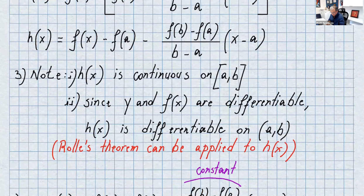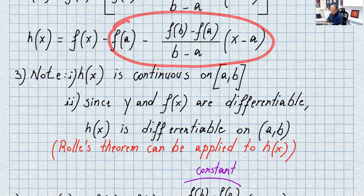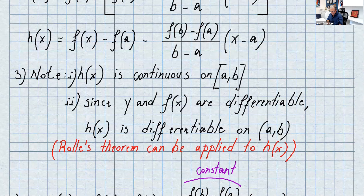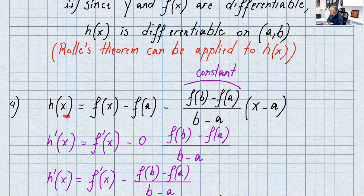Now we note that h(x) is continuous on the closed interval [a, b] because f(x) is continuous and the line segment is continuous. Since both f(x) and the linear function y are differentiable, h(x) is differentiable on the open interval (a, b). Now we can apply Rolle's Theorem to h(x). Recalling h(x) equals f(x) minus f(a) minus f(b) minus f(a) over b minus a times (x minus a).